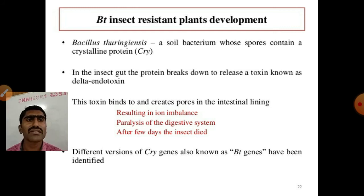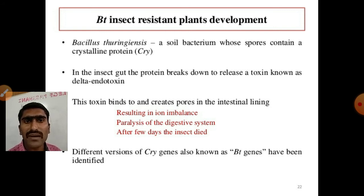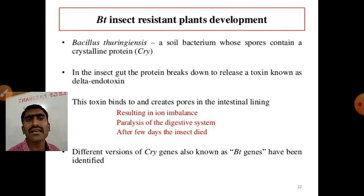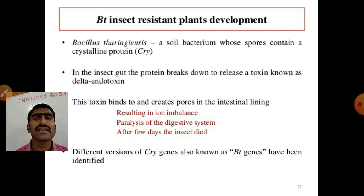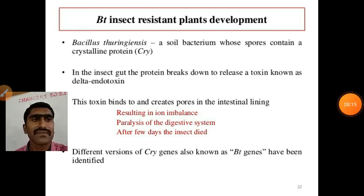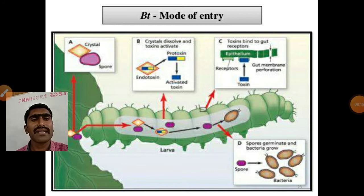After binding to the inner lining of the gut, the toxin creates holes, causes ionic imbalance, and blocks the ionic channel. When the bacteria encounters an organism like the pink bollworm, it kills it. Different versions of cry genes, also known as Bt genes, have been identified. These cry protein synthesizing gene variants are called Bt genes, and we have seen these different Bt genes used in different crops in the previous slide.